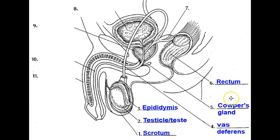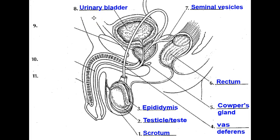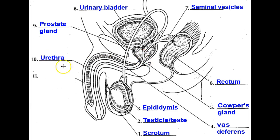Number six is the rectum. Number seven is the seminal vesicles, which also secrete fluid to mix with the sperm. Number eight is the bladder. Underneath the bladder and surrounding the urethra is the prostate gland. Males that have an enlarged prostate — this tends to press on and close the urethra, and they have trouble with urination. There's medication, of course, to relax the prostate from pressing on the urethra. Number ten is the urethra, which can be traced all the way back up into the bladder. And of course, the penis.